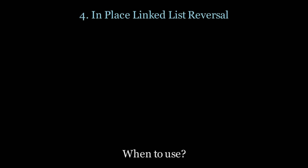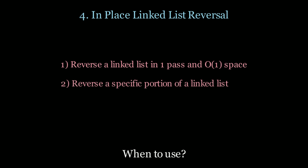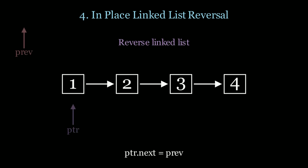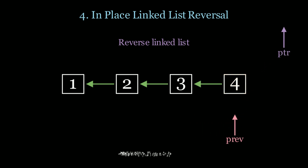The next pattern is reversing a linked list in place. Use this when you want to reverse a linked list in one pass in constant space, reverse a specific portion of a linked list, or reverse nodes in groups of k. We initialize two pointers — previous and pointer (current node). At every iteration, pointer.next points to the previous node. Then we move previous to pointer and pointer to the next node. We follow this formula until we scan the entire list. The previous pointer then points to the new head. This runs in O(n) time and O(1) space.